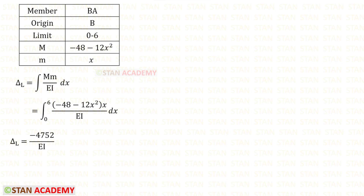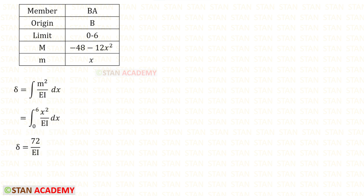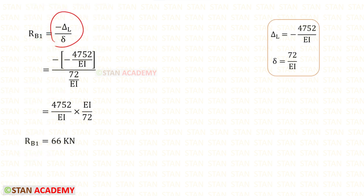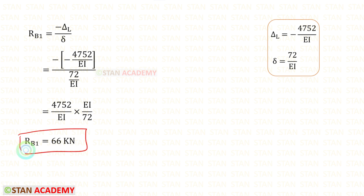Now let us find delta_L using the formula: integration of m times M divided by EI dx. Then let us find delta using the formula: integration of m squared divided by EI dx, which gives 72 divided by EI. Applying both values in the formula, we finally get RB1 equal to 66 kilonewtons.